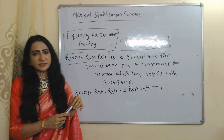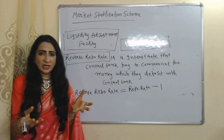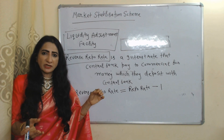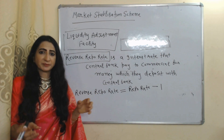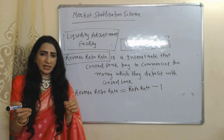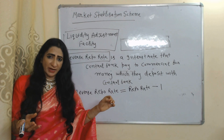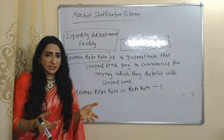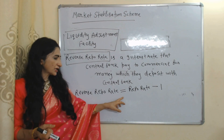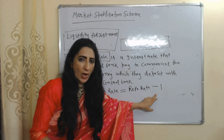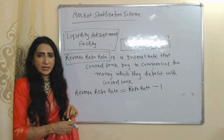The next is reverse repo rate — it is the interest rate that the central bank pays to commercial banks for the money which they deposit with the central bank. Reverse repo rate is equal to repo rate minus 1%, meaning the reverse repo rate will always be less than the repo rate.